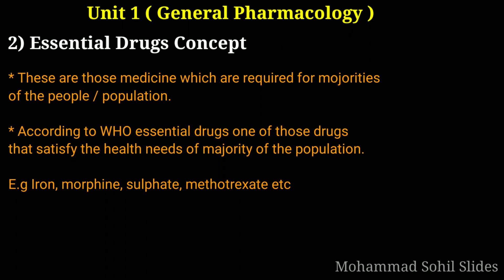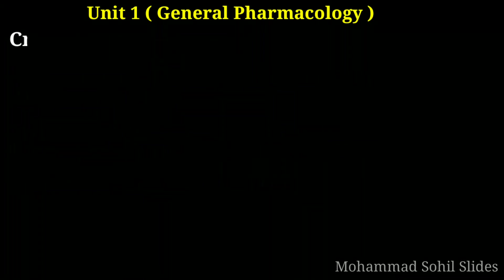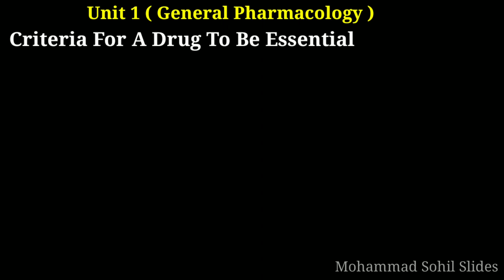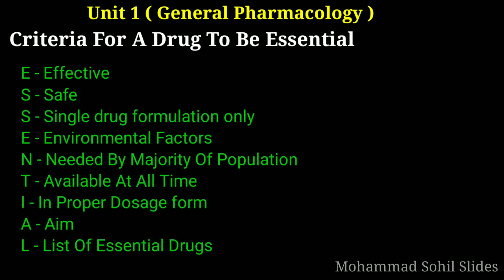Now, the criteria for a drug to be essential: it should be effective and economical; it should be safe; it should be in single drug formulation mostly; environmental factors are also considered in making the choice; it must be needed by the majority of the population; it must be available at all times; it should be in proper dosage form; the aim is to optimally use limited financial resources; and the essential drug list (EDL) is made locally with the help of the WHO model.